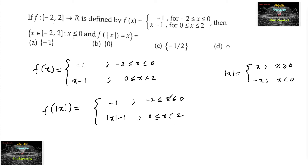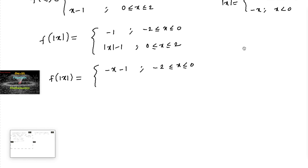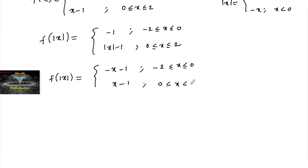So for x < 0, we can rewrite f(|x|) as -x - 1 for x in (-2, 0). And for x ≥ 0, we write it as x - 1 for 0 ≤ x ≤ 2.